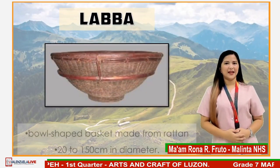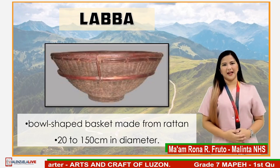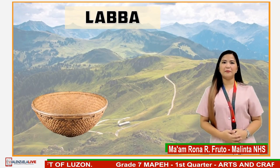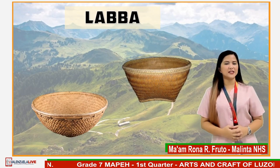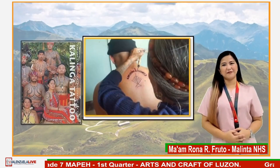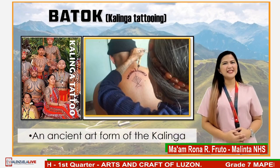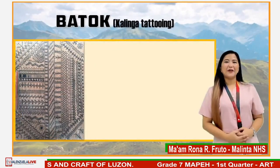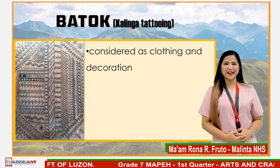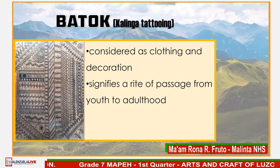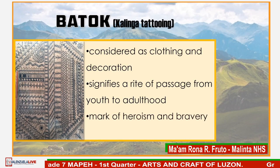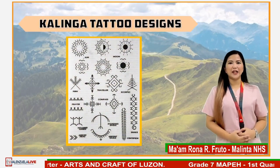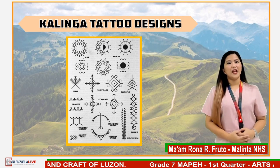This is lava, a bowl-shaped basket of Kalinga made from rattan, about 20 to 150 centimeters in diameter. It is a round or square-based basket used for carrying or storing rice or vegetables. Batok or Kalinga tattooing is an ancient form of tattooing that is a bit more painful than modern methods. For Kalinga, tattoo is considered as clothing and decoration, which signifies a rite of passage from youth to adulthood, a mark of heroism and bravery, or status in the community. These are common Kalinga tattoo designs: nature and geometric patterns, shapes and lines.